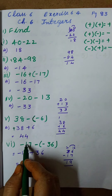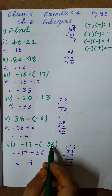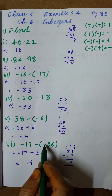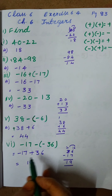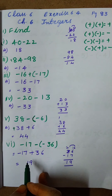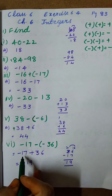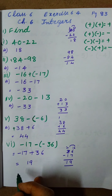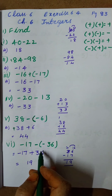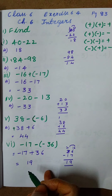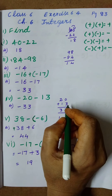Next: minus 17 minus of minus 36. We write minus 17 as is. Minus into minus gives plus 36, so now we have minus 17 plus 36. Minus into plus gives minus, so we subtract: from 36 we subtract 17 and get 19. The biggest number is 36 and it has a plus sign, so the answer is plus 19.